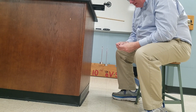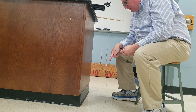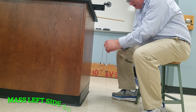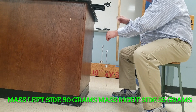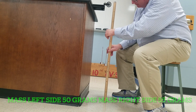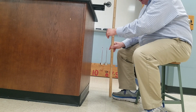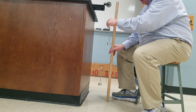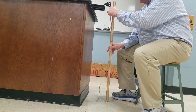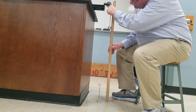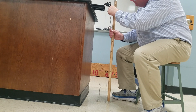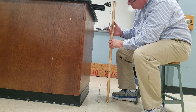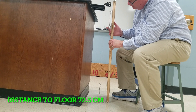We're going to start off with 5 grams added to one side. These are already 50 grams, so I'm going to have 55 grams on this side and 50 grams on the other. We're going to start it at a height of about 72.5 centimeters.